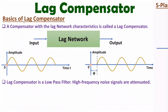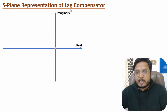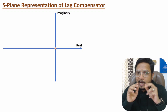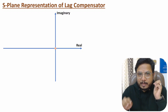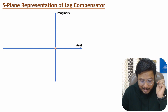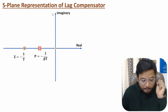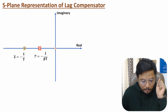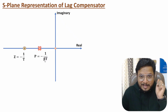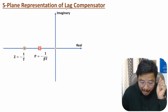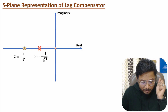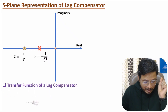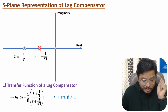Now I will discuss about S-plane representation of lag compensator. Using lag compensator, we can add negative phase, and that we do by adding one pole and one zero. Here in the S-plane, we have the horizontal axis that is the real axis and the vertical axis that is the imaginary axis. We add one pole and one zero on the left half plane. The zero is at minus one by T, and the pole is at minus one by beta T, where beta is greater than one.